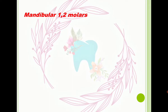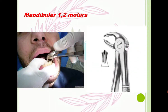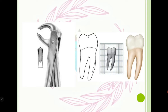Now let's look at mandibular first and second molar extraction forceps. Pay attention to the working part — there are two beaks. To understand why, let's check the root morphology of mandibular molars: there are two roots. One beak locates between the roots on the buccal side, and the other locates on the opposite lingual side. That's why there are two beaks — one for each space between the roots.